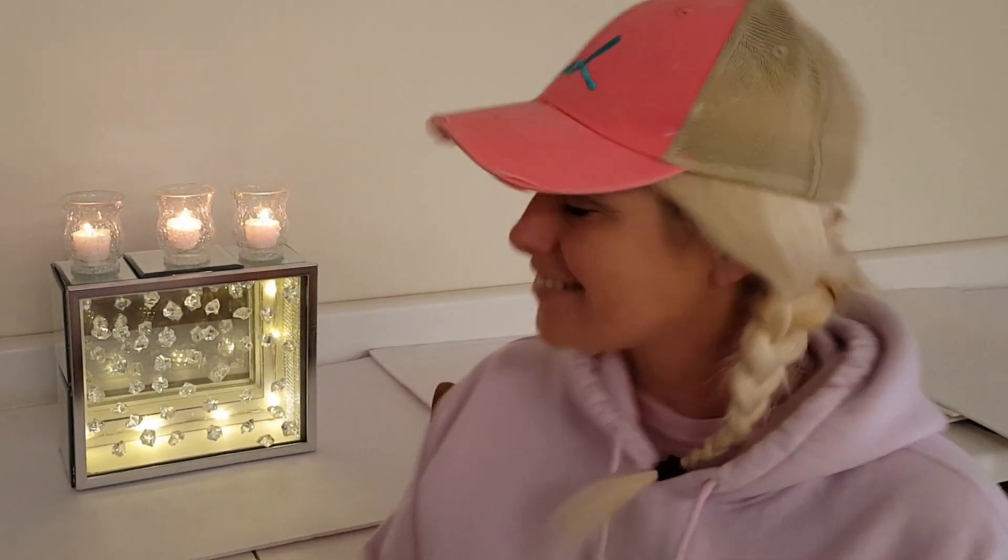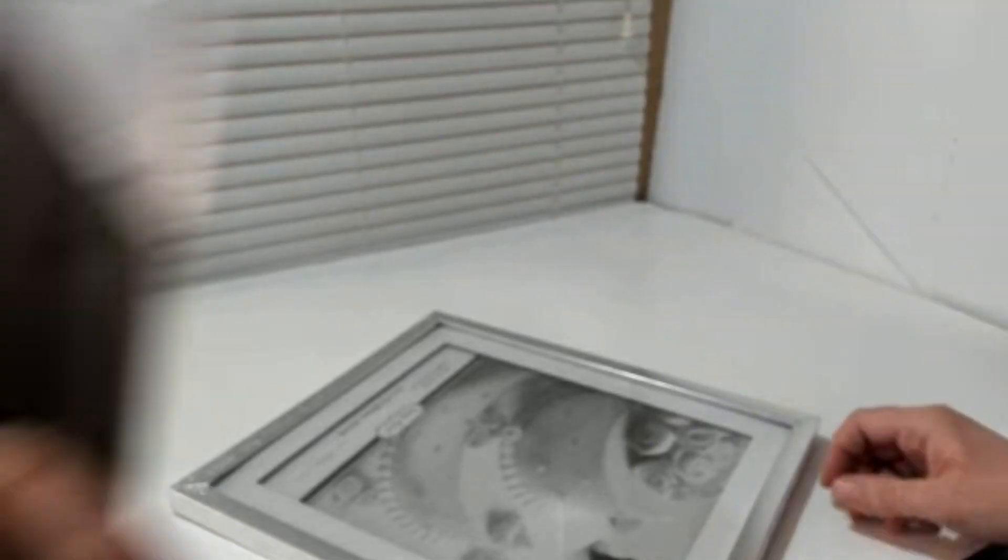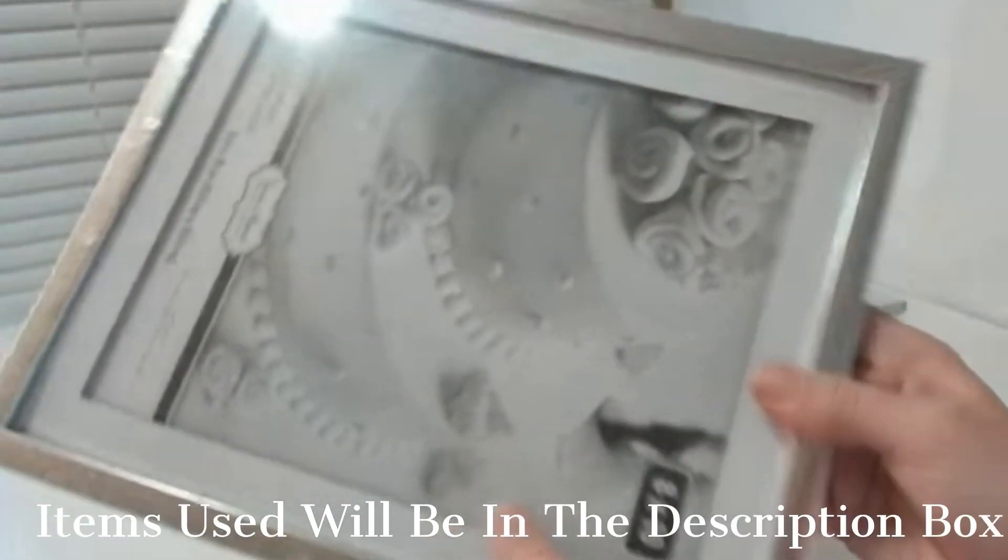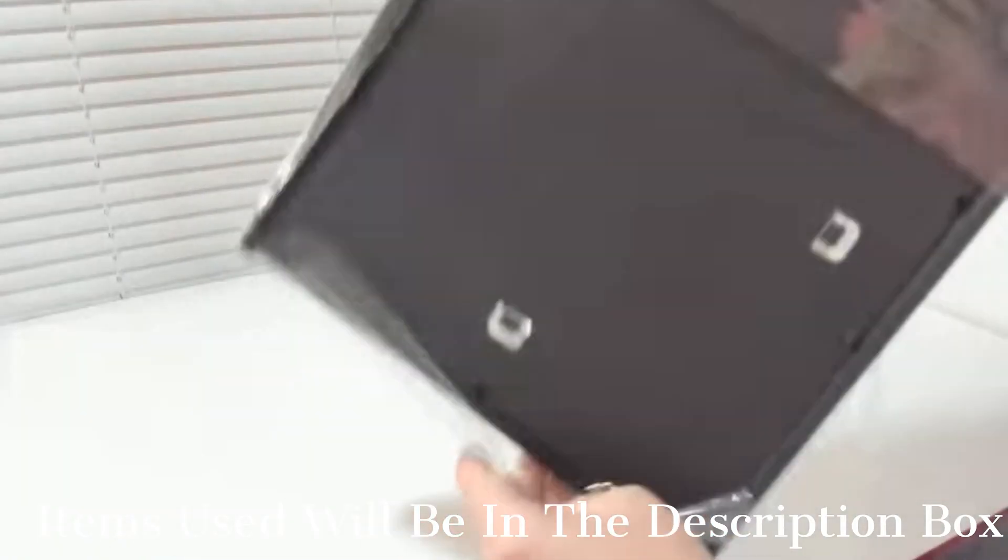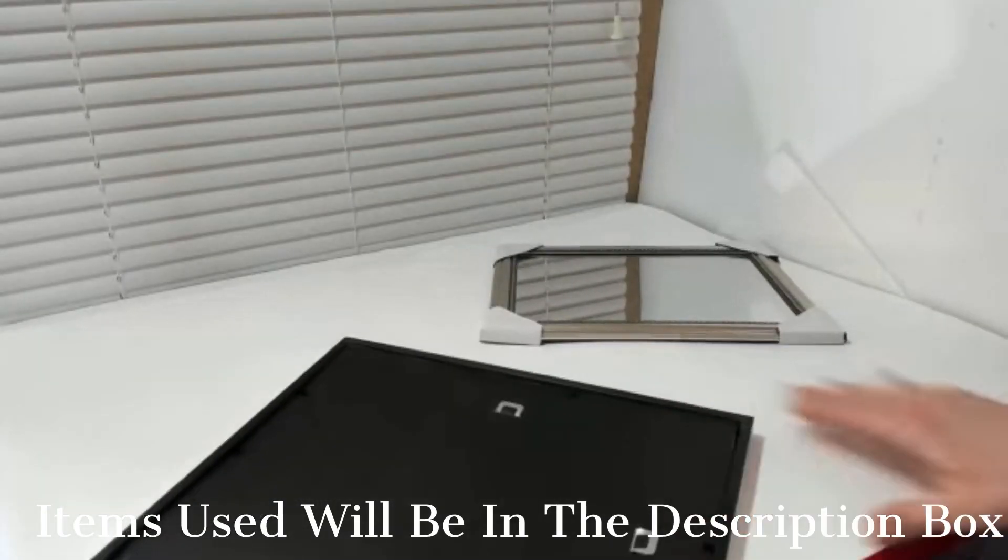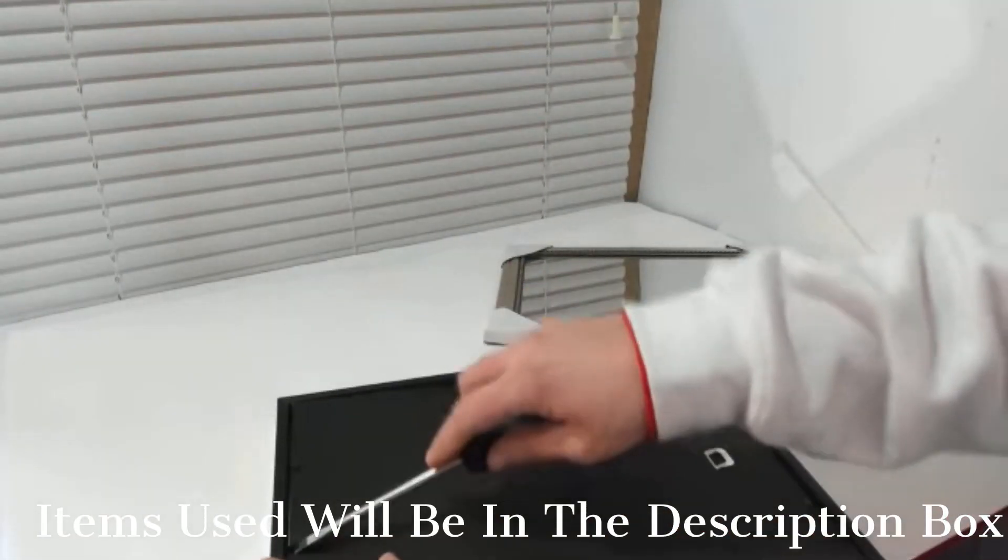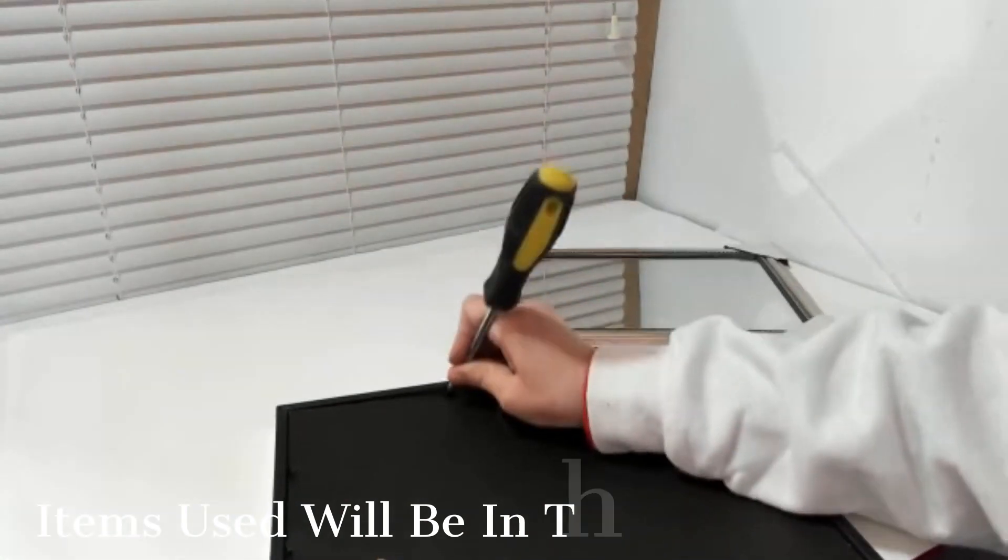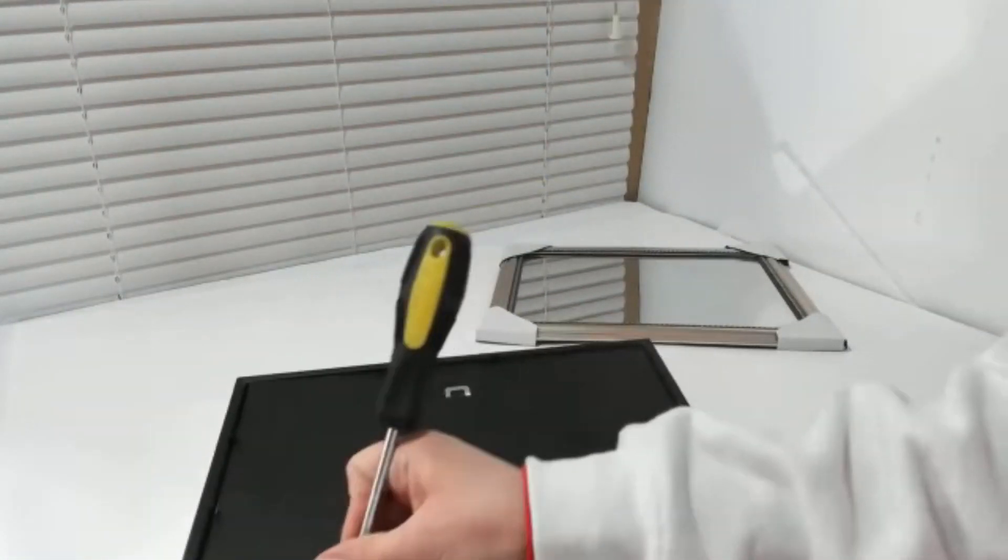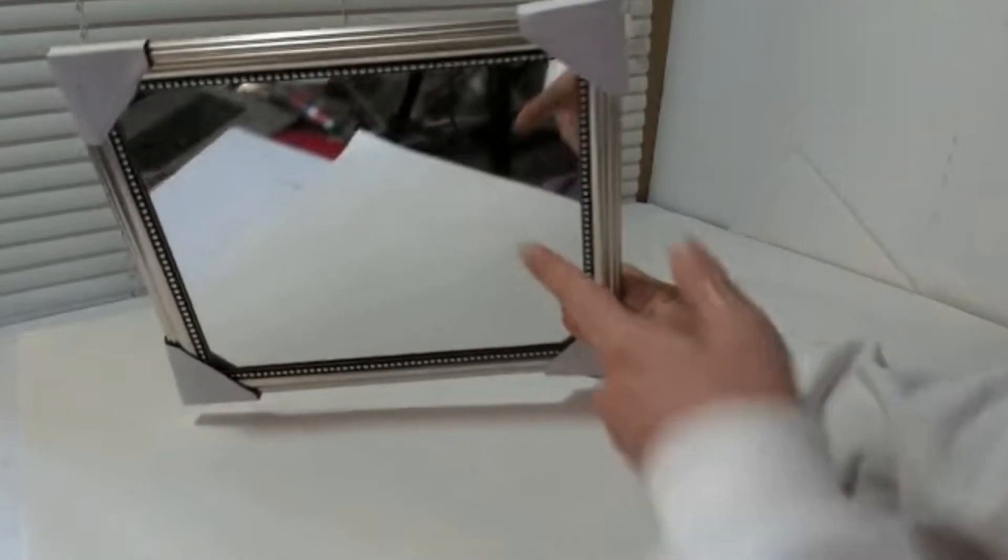So let's jump right into the video and show you how it's made. I have three picture frames and they're all eight by tens. I picked the biggest ones out that they had and these actually have like a mat on the inside and they're bigger than the other ones that are in the Dollar Tree. So you want to save one of those mats because we're going to use that for the mirror.